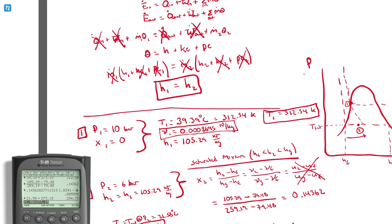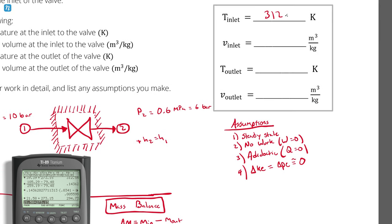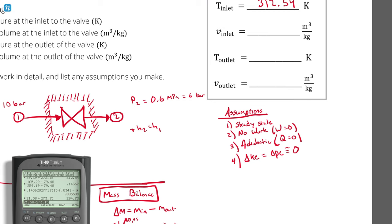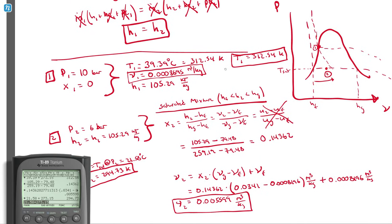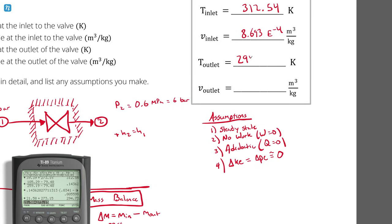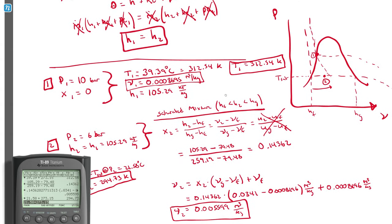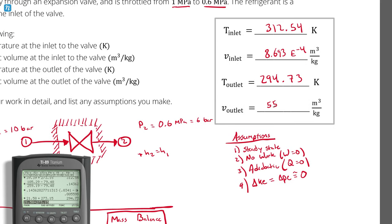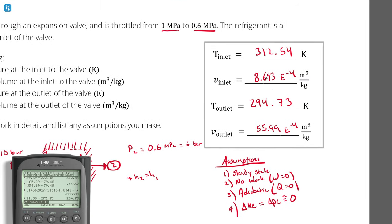I have all of my answers, it's just a matter of plugging them in. So T1 is 312.54 Kelvin, V1 is 0.0008693 cubic meters per kilogram, T2 is 294.73 Kelvin, and V2 is 0.005599 cubic meters per kilogram. Notice how I kept consistent units again to compare. I could have written 5.59e to the negative third. That's problem 3, which is the end of the exam. You just finished exam 2 from spring 2015 semester of thermal 1.